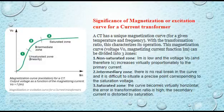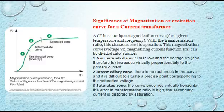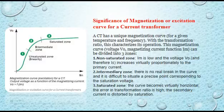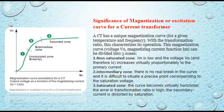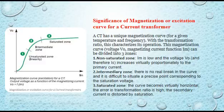In the non-saturated zone, Im is low and voltage and current increase virtually proportionally to the primary current — this is the linear region marked as zone one on the curve. In the intermediary zone, there is no real break in the curve and it is difficult to locate a precise point corresponding to the saturation voltage. In the saturated zone, the curve becomes virtually horizontal, the transformation ratio error is very high, and the secondary current is distorted by saturation.